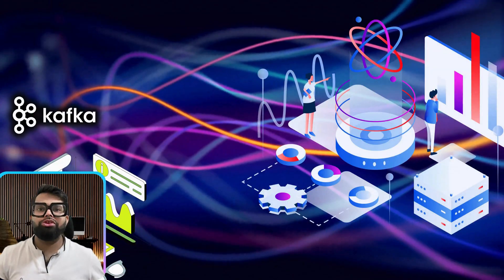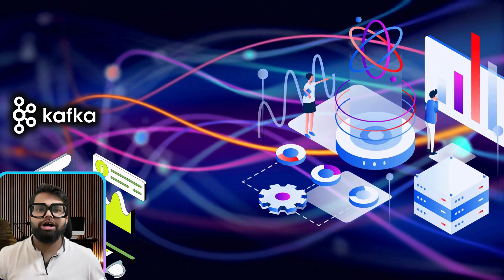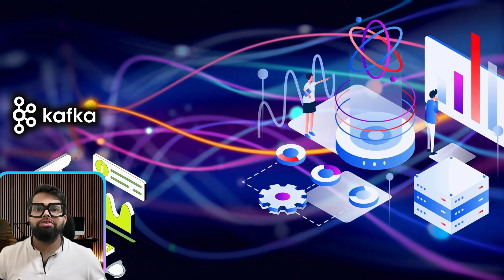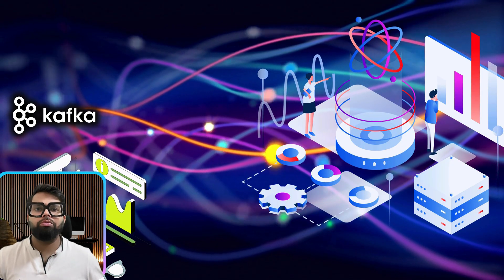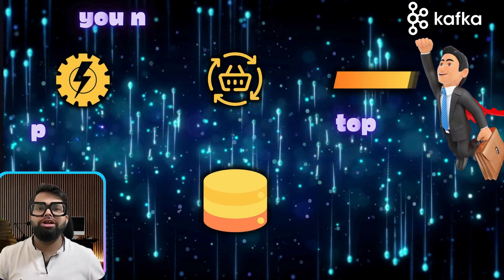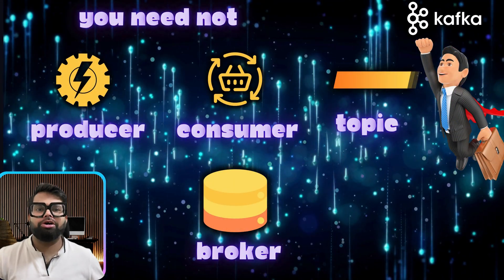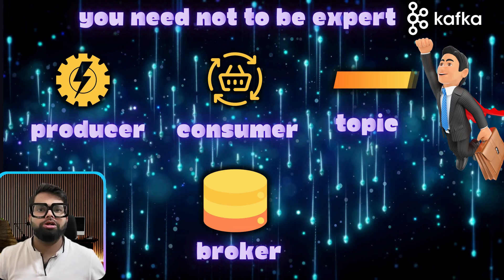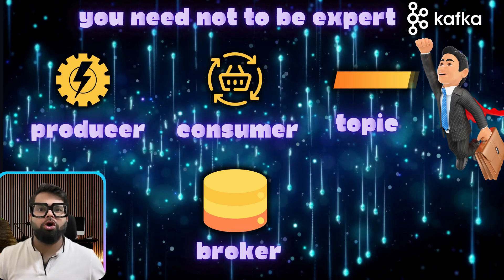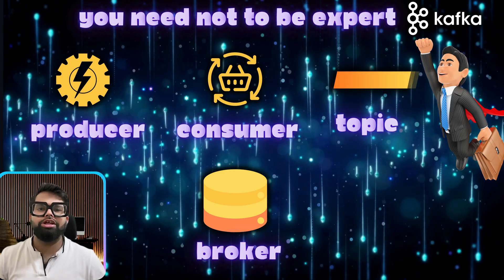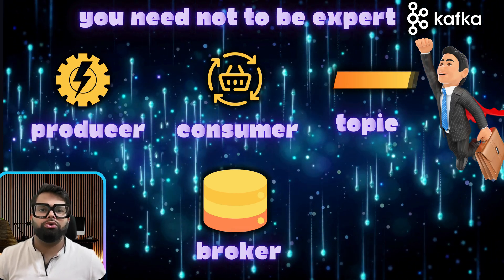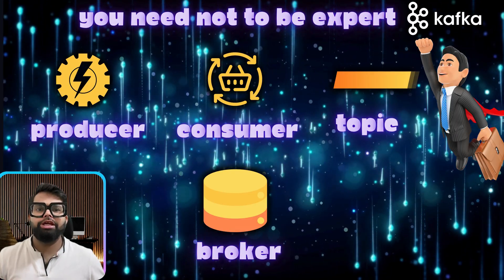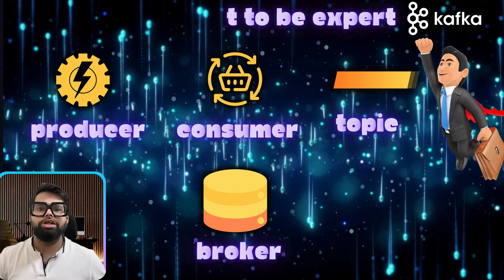Kafka is more than a tool. It streams data, stores it reliably, and processes billions of events at speed. You don't need to be an expert. I'll break down Kafka — producers, consumers, partitions, topics — everything that you need to know, using a real example of Airbnb and simple visuals.